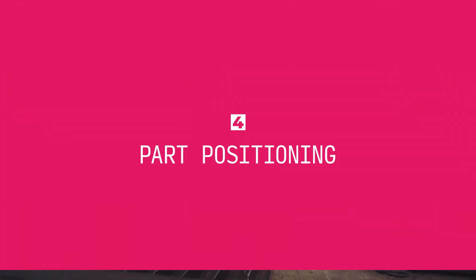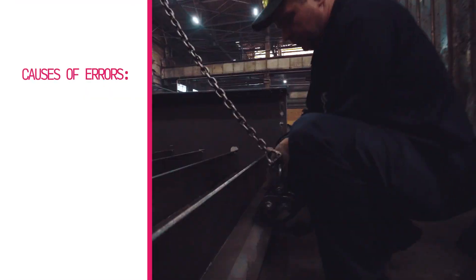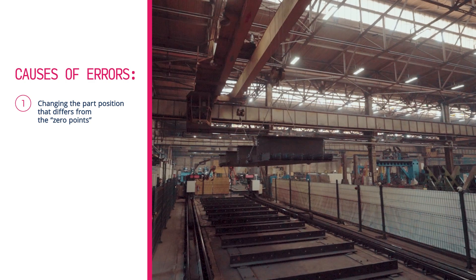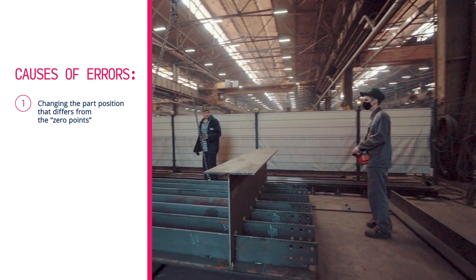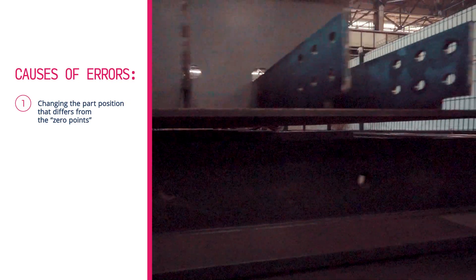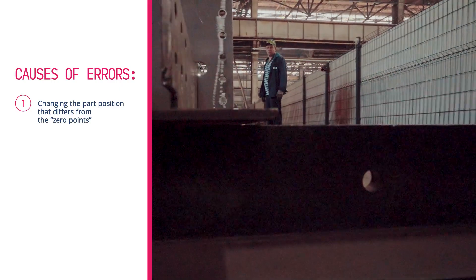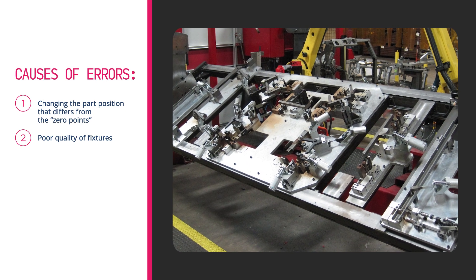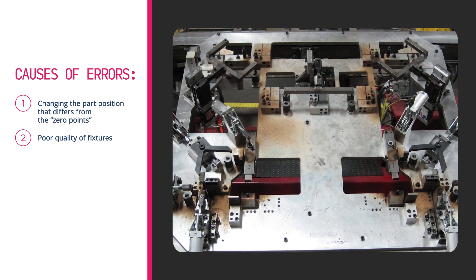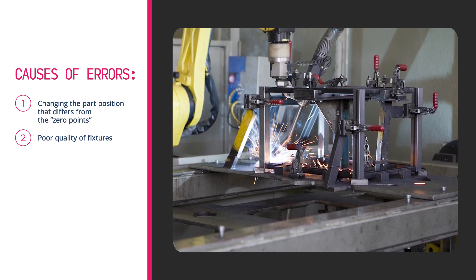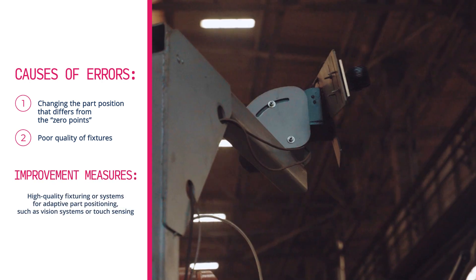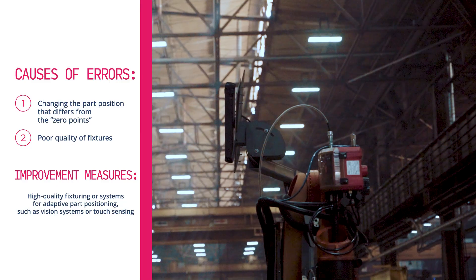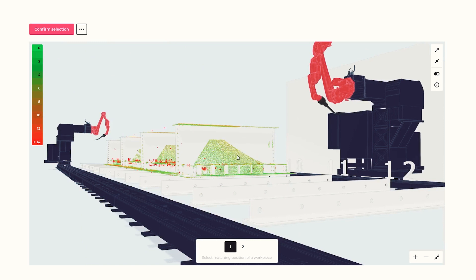Regarding part positioning: in the conventional approach to robotics, there is a concept known as the zero point — specific locations within the work zone where a part should be positioned with the utmost precision. Ensuring exact placement each time requires considerable effort, and this becomes even more challenging in high-mix production scenarios. This problem can be solved using fixtures, but high-quality and complex fixtures can be prohibitively expensive and are often produced for each specific part type, making them not versatile. However, this challenge can be overcome through the adaptability of robots, the incorporation of vision sensors, and the implementation of touch-sensing procedures.